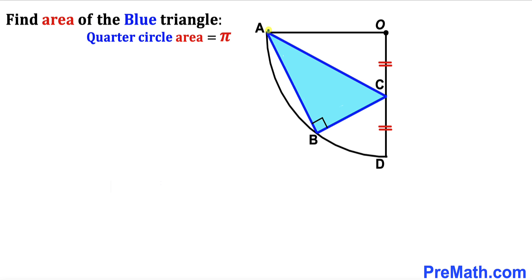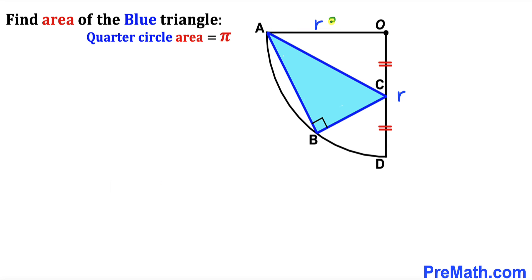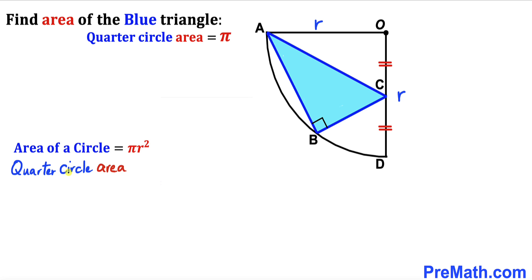We can see that AO is the radius of this quarter circle — let's call this radius lowercase r. Likewise, OD is also going to be radius r. Now let's recall the area of a circle formula: area equals π r squared, where r is the radius. So the quarter circle area is going to be one fourth of that, which we can write as π r squared divided by 4, and we know the area of this quarter circle is π.